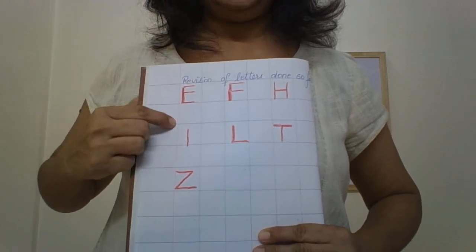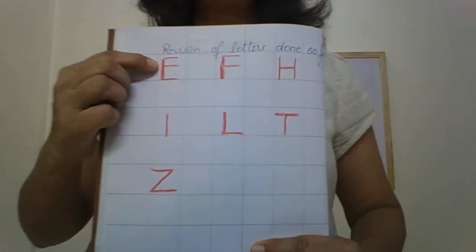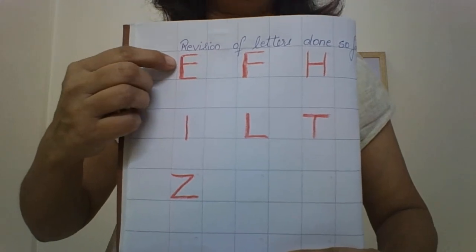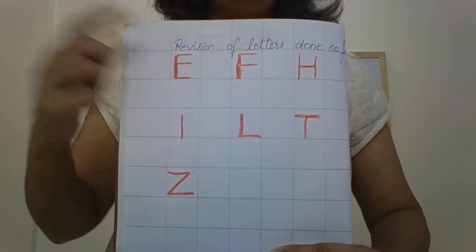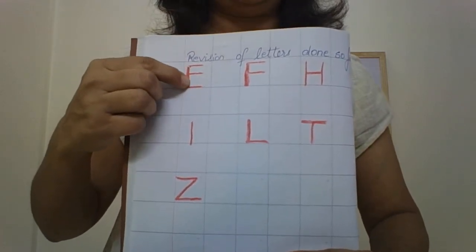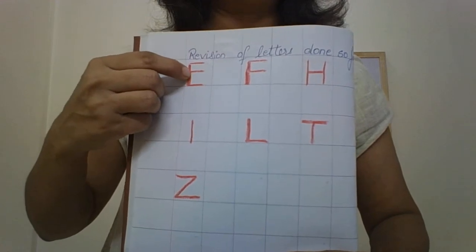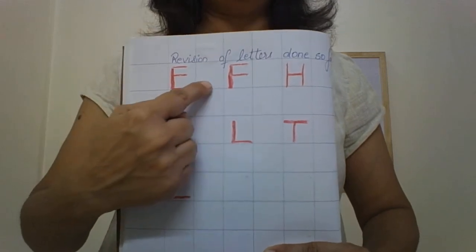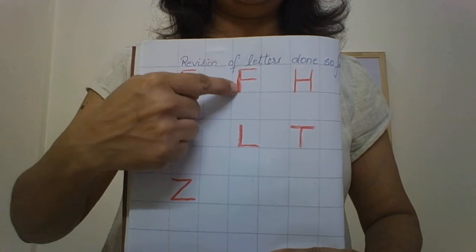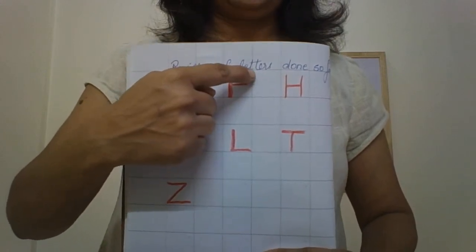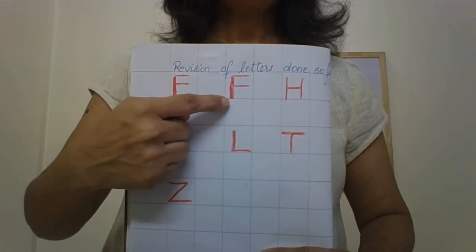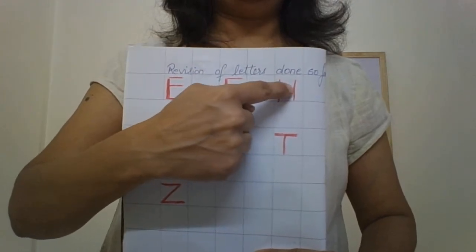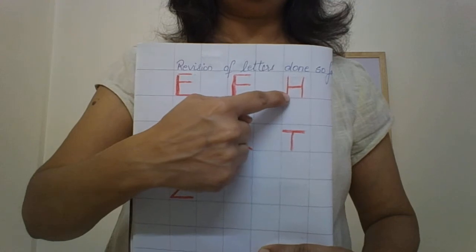This red line is the margin. We begin at the first box next to the margin. Letter E: standing line, one sleeping line on top, one sleeping line in the middle, one more sleeping line. Letter E. Leave a square. Letter F: standing line, sleeping line on top, sleeping line in the middle. Letter F. Again, leave a square. Standing line, sleeping line in the middle, standing line — letter H.